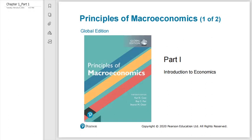Today we will start chapter one, part one of the book, which is an Introduction to Economics. The emphasis will be on microeconomics as we will explain. Then starting from part two, we go to Introduction to Macroeconomics, and part three covers the macroeconomic model and so on. Part one, chapter one is called the Scope and Method of Economics, covering fundamental concepts, definitions, scope, and methodology.